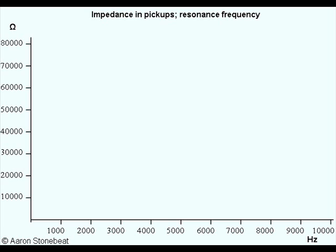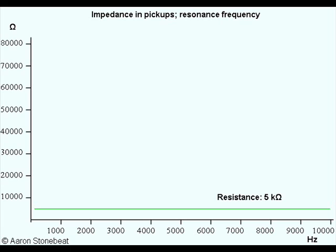First of all, a coil has a resistance, because it's wound from a wire that has a certain resistance. In this example, I'll put the resistance at 5kΩ or 5,000Ω. Many people mistake this resistance for the impedance of a pickup, but it's just plain resistance — it's the same at all frequencies. At best, it can tell you how long the wire in the coil is, if you know the resistance per unit of length of the wire.